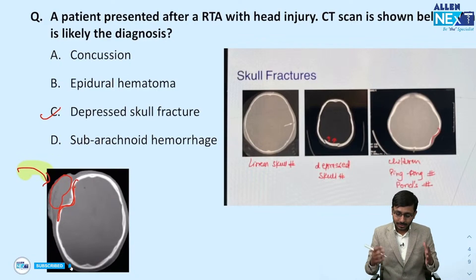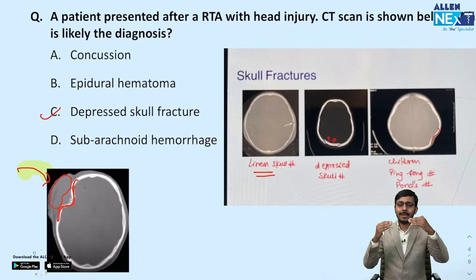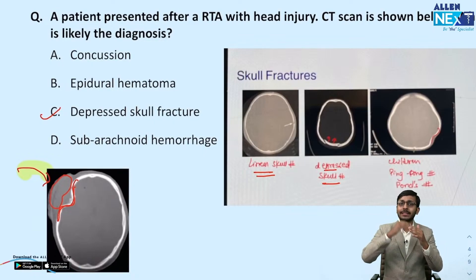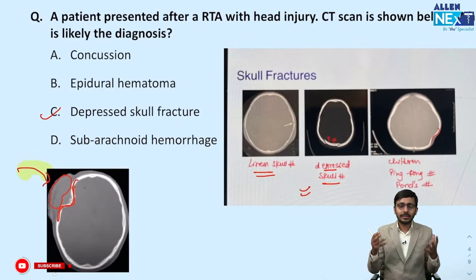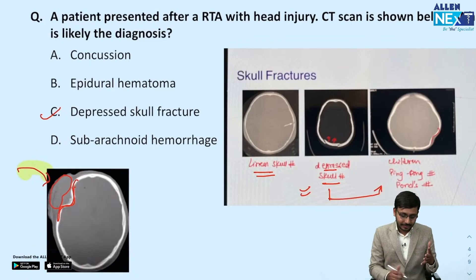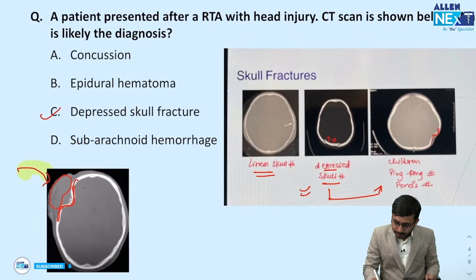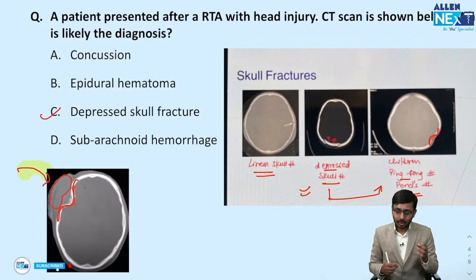Various types of skull fractures: linear fractures are the most common, where the fractured segments are not displaced. In depressed skull fractures, the fractured segments go inside the brain — they get depressed — and they need to be treated because they increase intracranial pressure. In children, because their bones are pliable and malleable, the bones bend inwards without a cortical breach. This is known as a ping pong fracture or pond fracture — a type of depressed fracture seen in children.